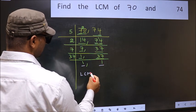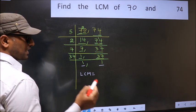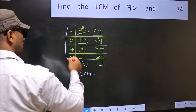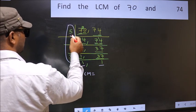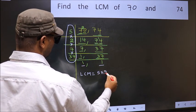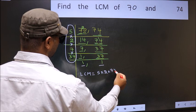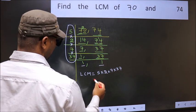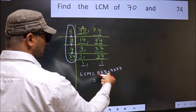So our LCM is the product of these numbers. That is 5 into 2 into 7 into 37. When we multiply these numbers, we get 2590 is our LCM.